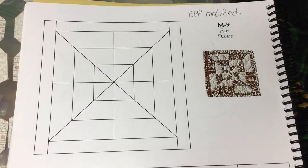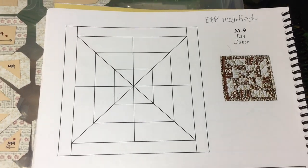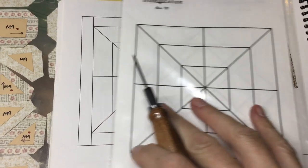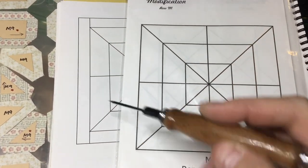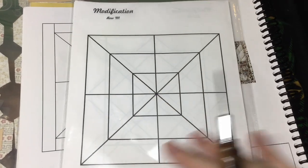Now we're up to M9. M9 is a modified block, so I'm going to go to the Paper Pieces booklet. They have just taken off this outside border, which is going to be where the sashing is anyway, so it's going to look the same.